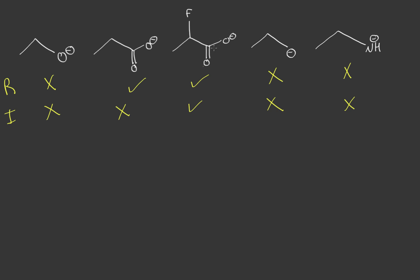The negative charge can travel between these two oxygens, and this fluorine is helping by taking away that negative charge, pulling it towards itself through electronegativity. So since this is technically the most stable molecule, this will be the least basic because adding a hydrogen would not only remove that negative charge but also create a partial positive on the carbon and the oxygen because of the fluorine. So we're going to keep this at number five.